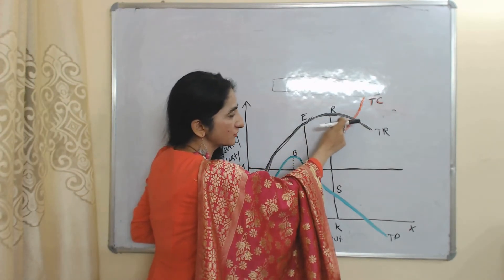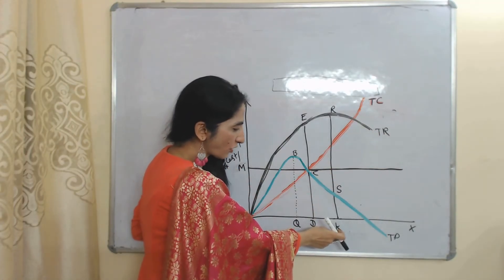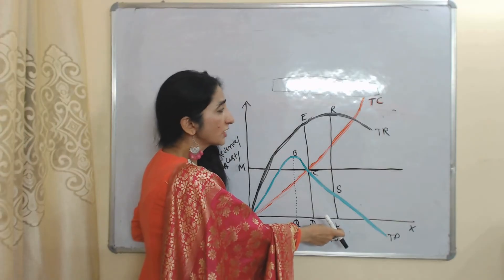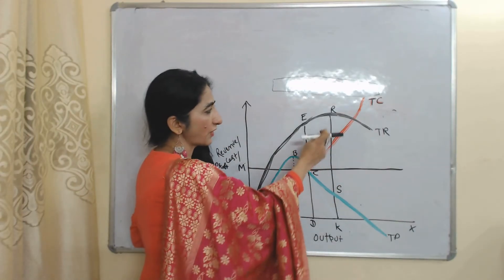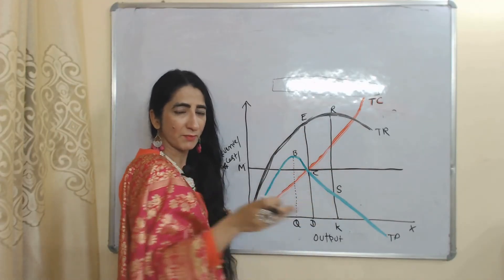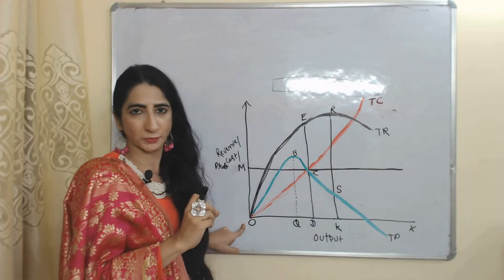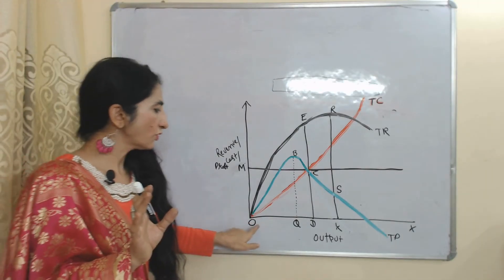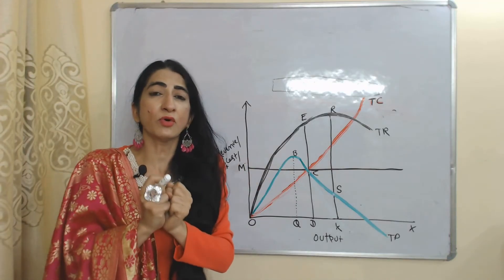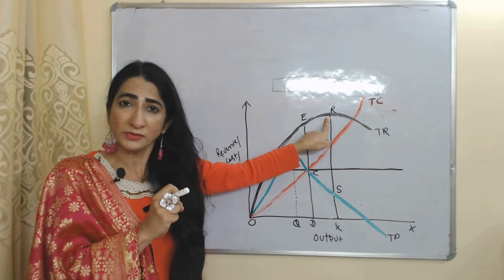After point R, our revenue starts declining. So we can say that OQ amount of output is the revenue maximization output because at this output, at point R, our revenue is maximum. But we cannot produce OK amount of output — but why not, even though we are getting maximum revenue there?